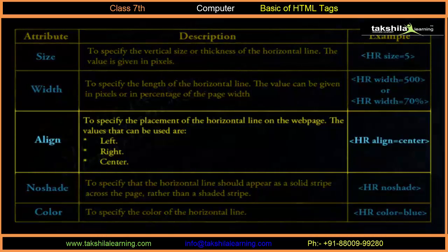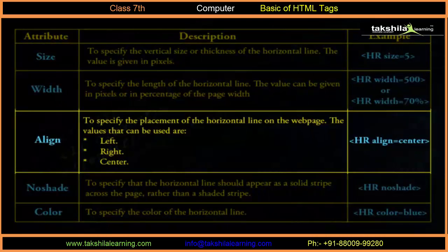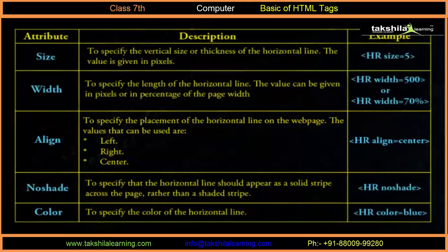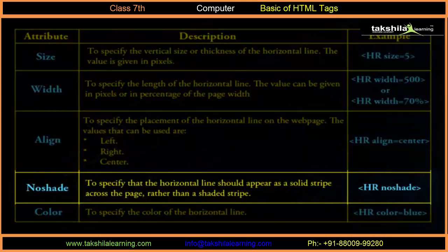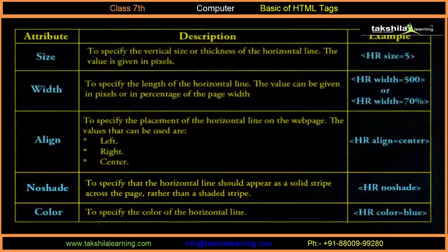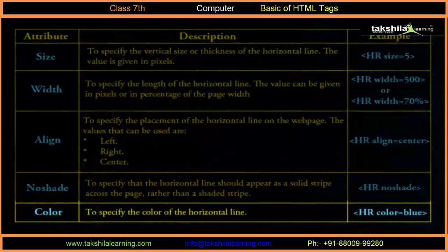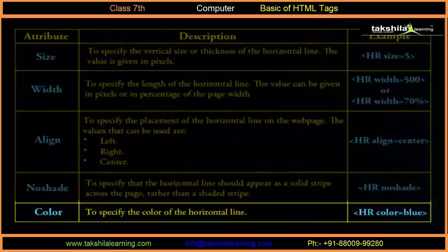The Align attribute specifies the placement of the horizontal line on the web page. The values that can be used are left, right, and center — for example, HR align is equal to center. The No Shade attribute specifies that the horizontal line should appear as a solid stripe across the page rather than a shaded stripe — for example, HR No Shade. The Color attribute specifies the color of the horizontal line — for example, HR color is equal to blue.